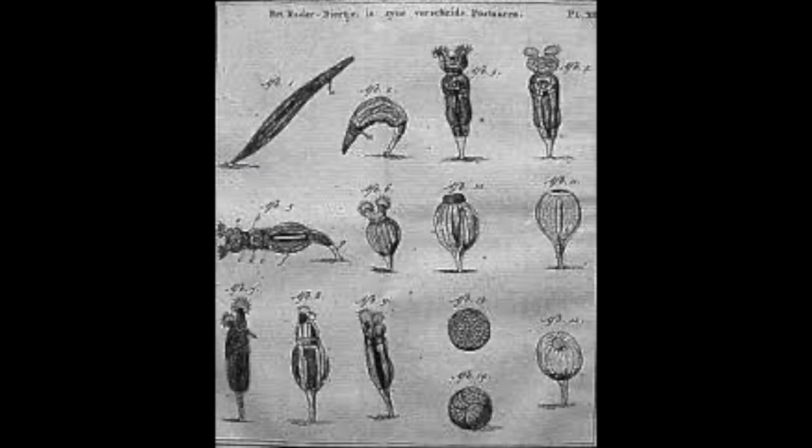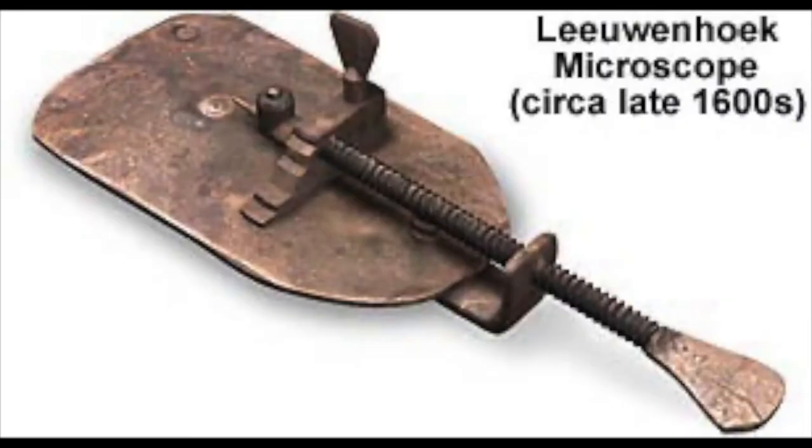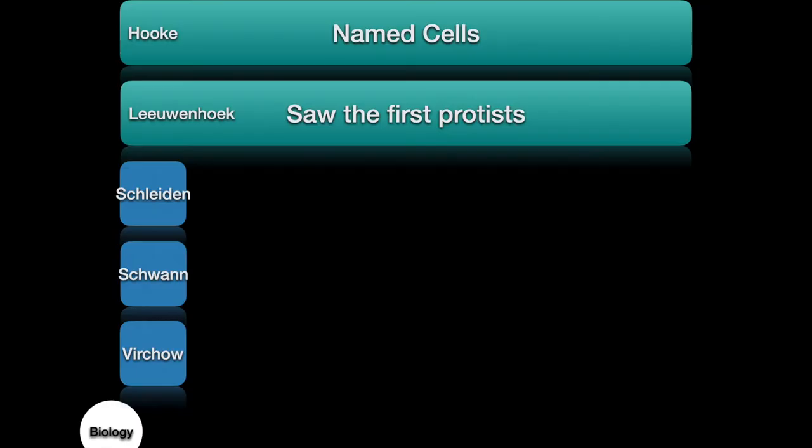Leeuwenhoek is the first to actually see protists, so single-celled organisms. He called them animalcules. And so he was using a very crude microscope in order to see these first unicellular organisms.